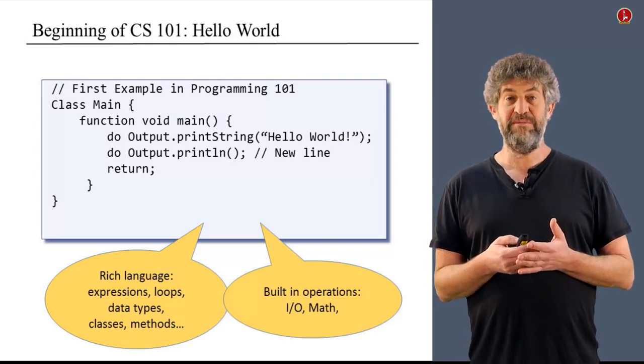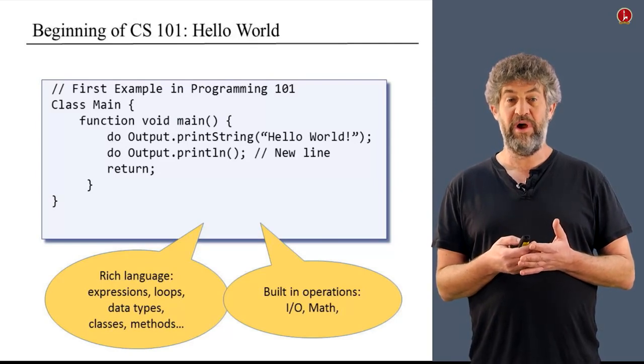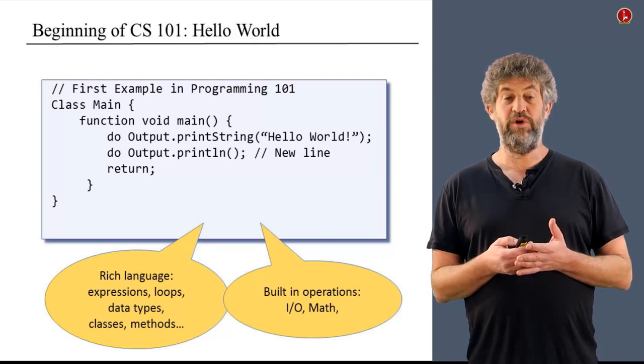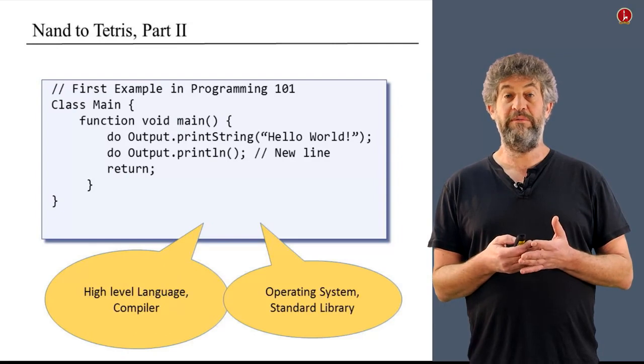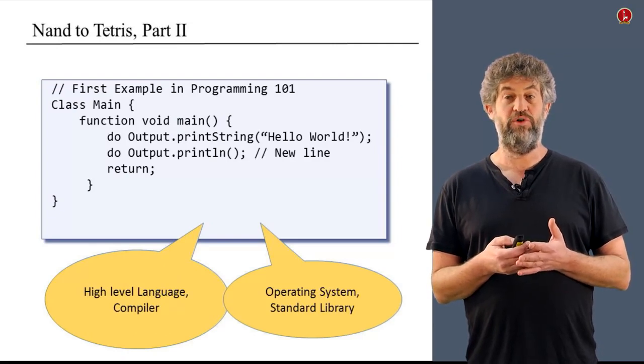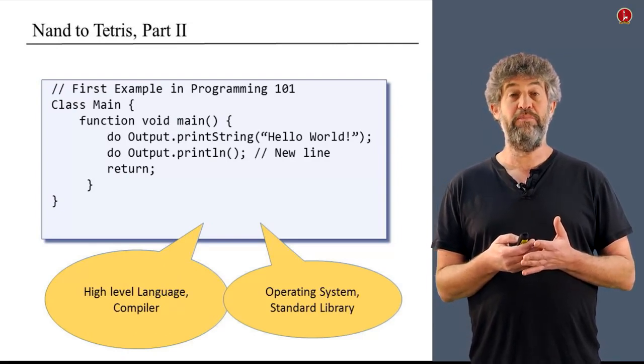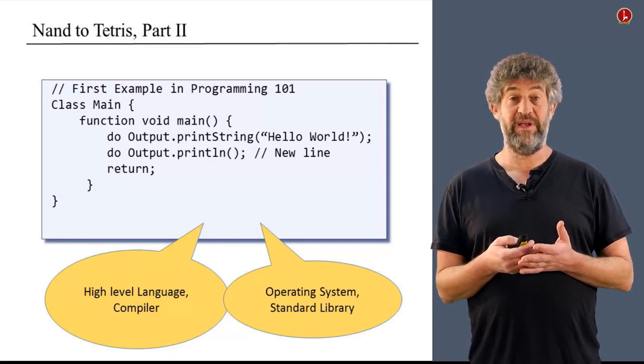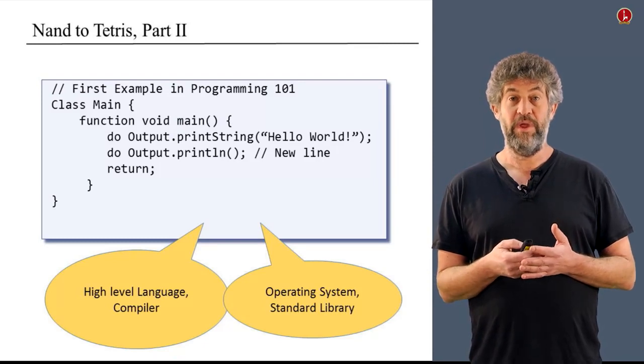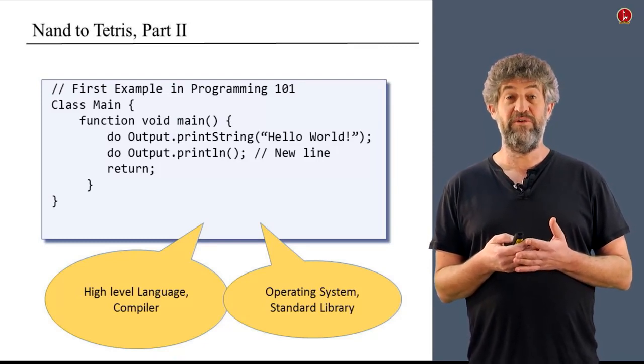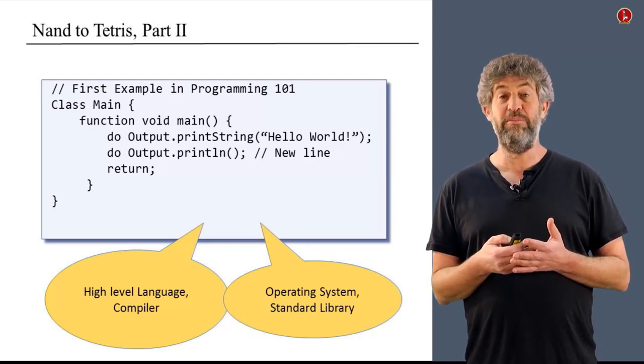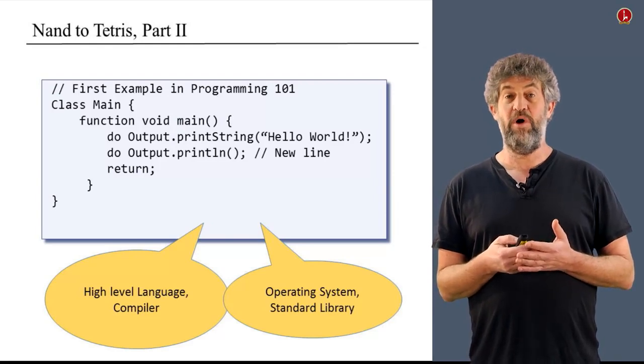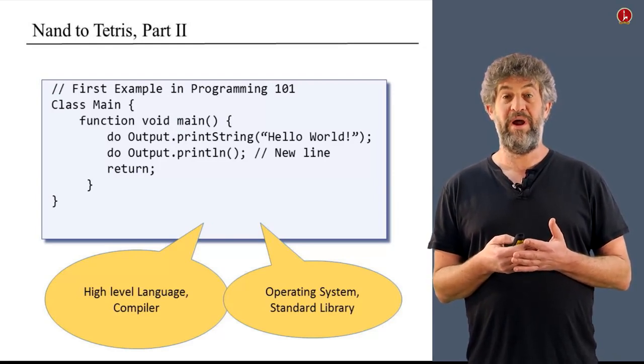And in fact, in the second part of the course where we deal with the software hierarchy, this is exactly what we're going to implement. We're going to present a high level language called Jack, and we're going to write a compiler for it using several layers of abstraction, of course, because that's a complicated thing, building a compiler. Similarly, we're going to build a standard library, and in fact a mini operating system that gives you all the high level services that programmers expect.